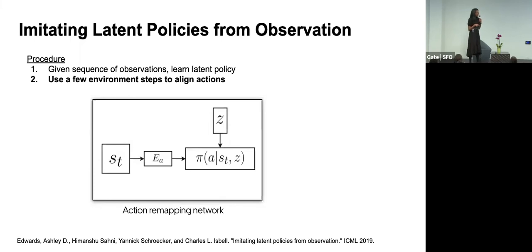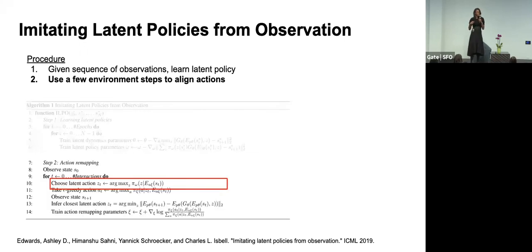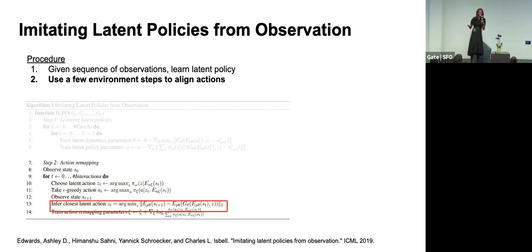After learning the latent policy, we need to align our latent actions to the real actions we can take in the world. We relabel the latent actions with the real actions using real world experience to figure out how to do that relabeling. Once that relabeling is learned, we can follow the relabeled policy to figure out which actions to take.